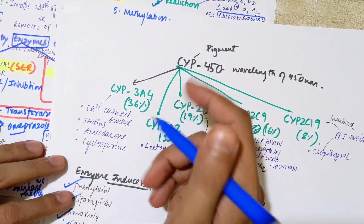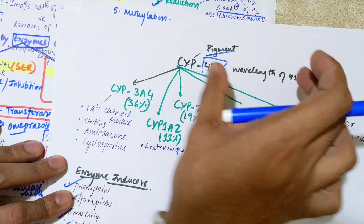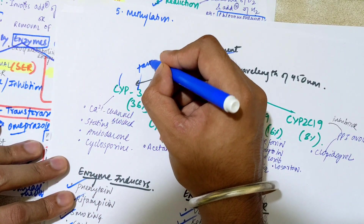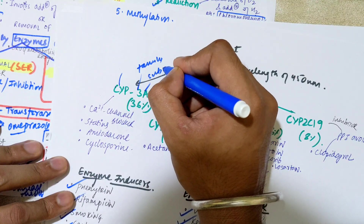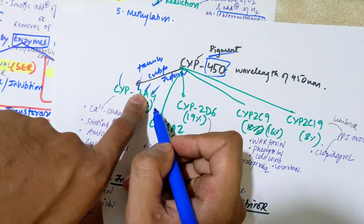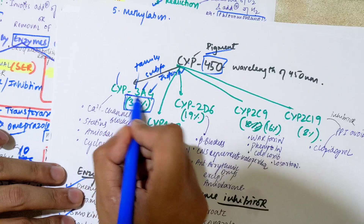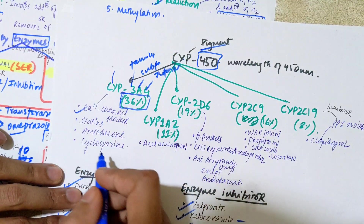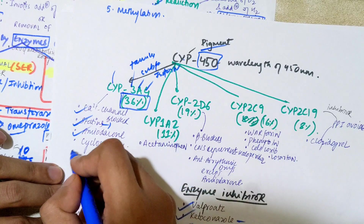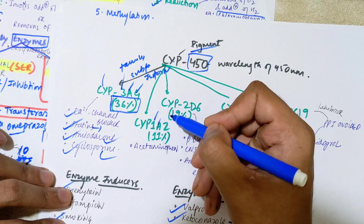Now let's look at CYP450 in detail. CYP stands for cytochrome, a pigment that absorbs at 450 nm wavelength. In the naming convention — for example CYP3A4 — the number 3 is the family, A is the subfamily, and 4 is the isoform number. CYP3A4 is the most common and abundant, metabolizing 36% of drugs, including calcium channel blockers, statins, amiodarone, and cyclosporine.